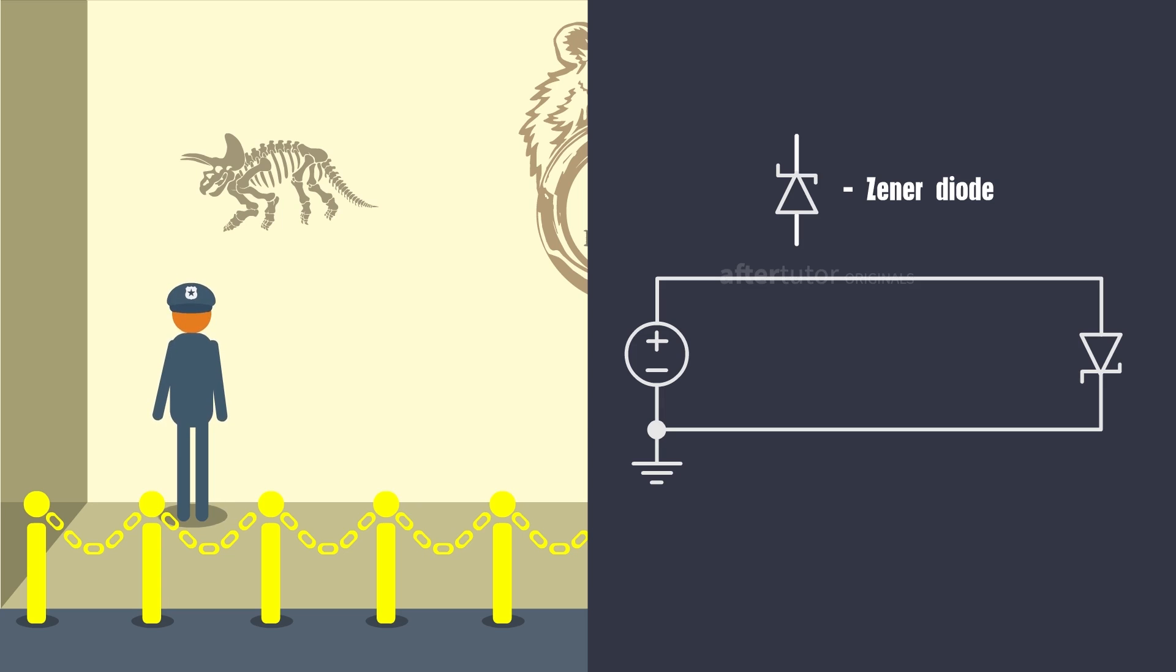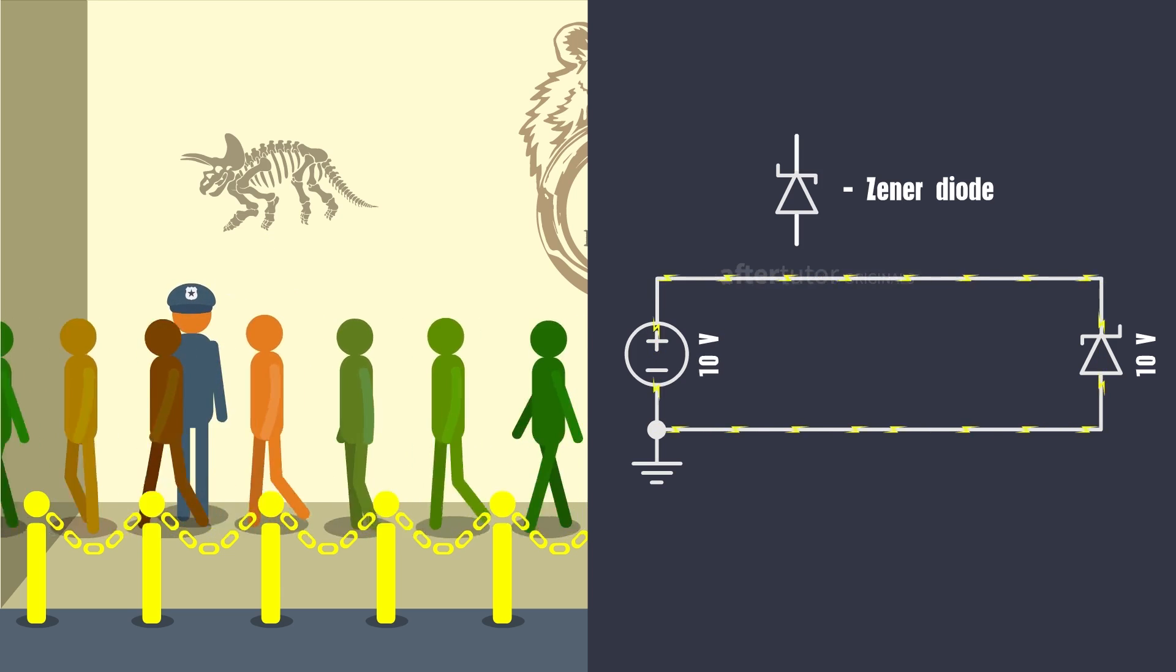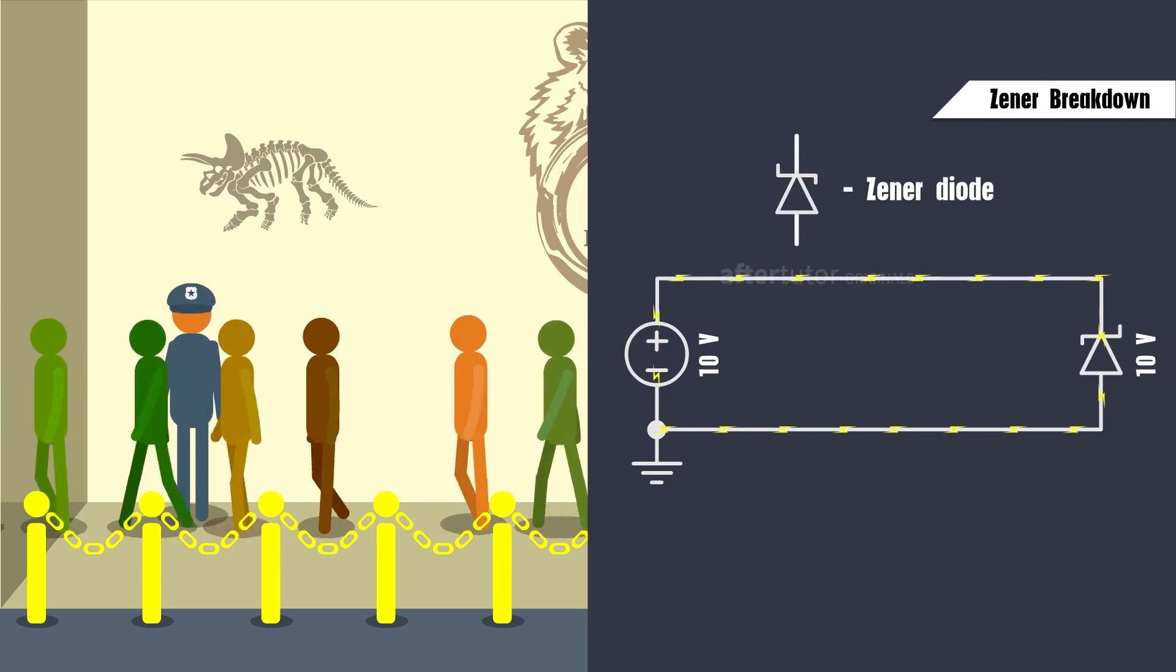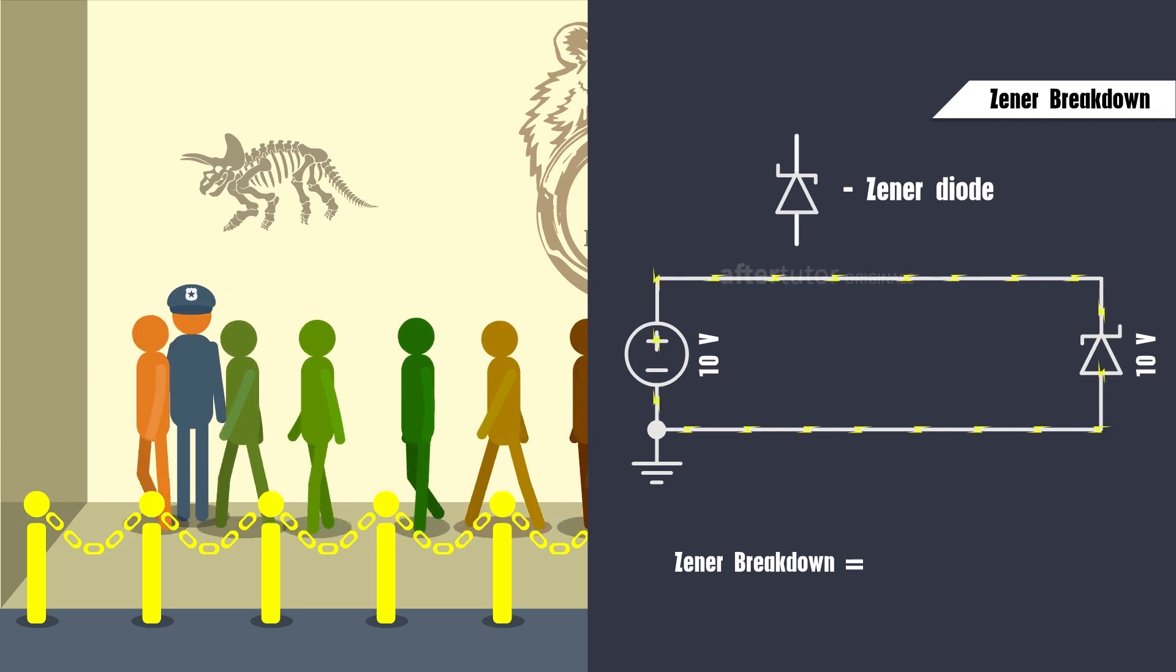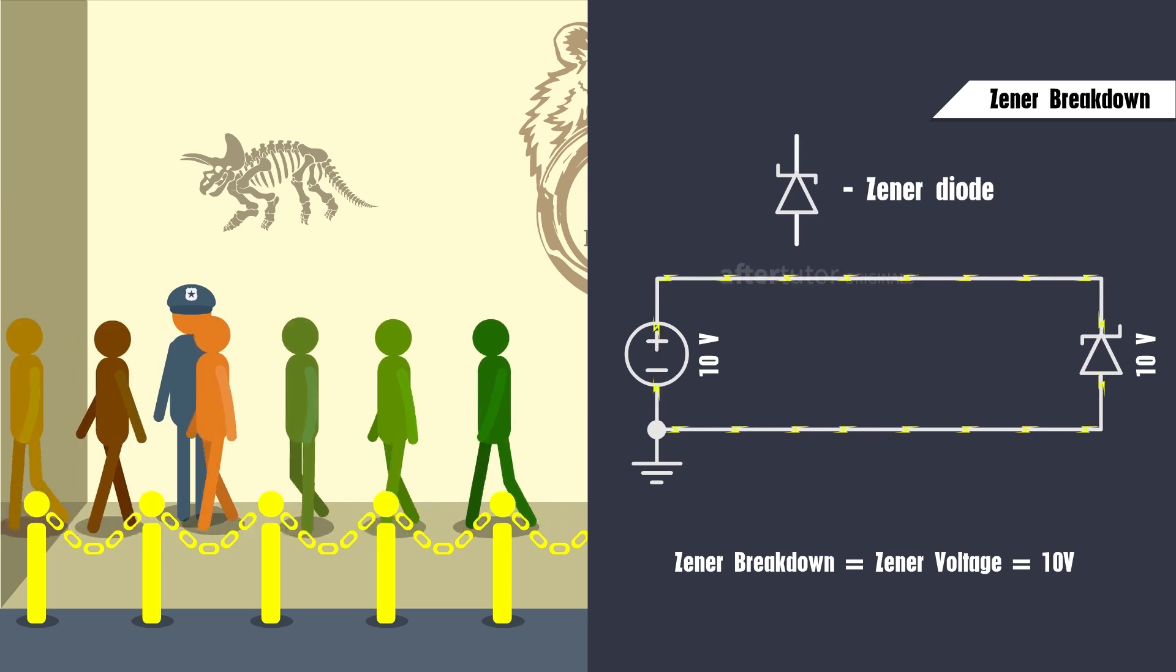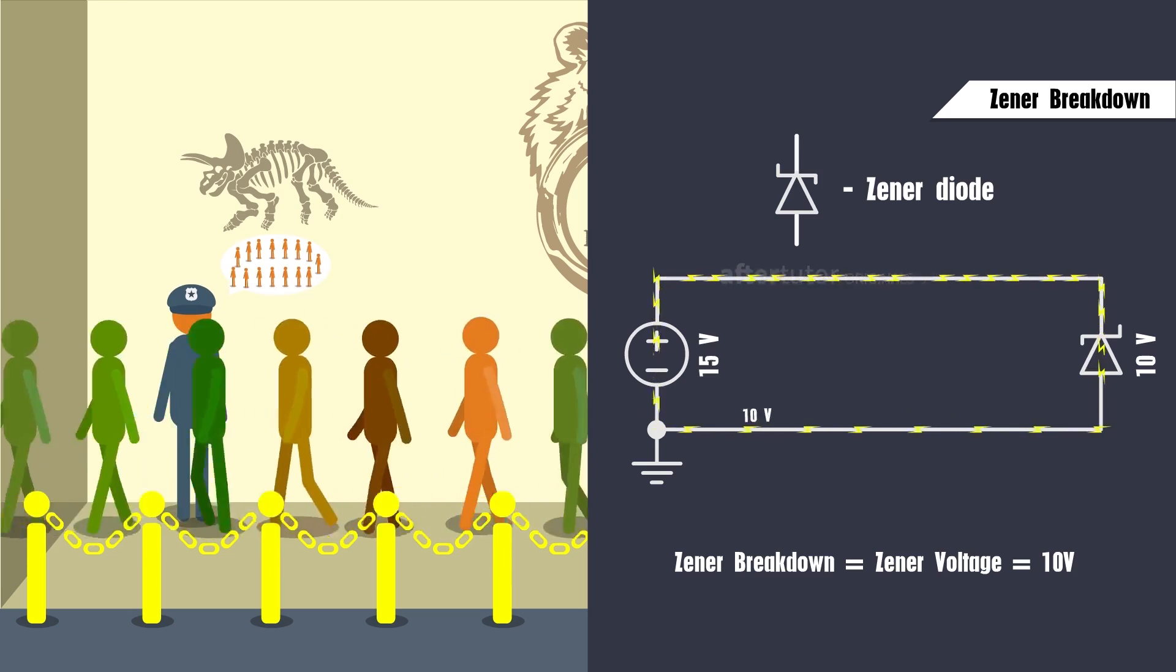The people who were sent by the security guard represent the specified Zener diode voltage, that is 10 volts. When the reverse voltage given to the Zener diode exceeds a certain specific amount, Zener breakdown occurs. The voltage at which the breakdown occurs is the Zener voltage. Whenever the breakdown occurs, the Zener diode will allow only its constant Zener voltage as the output.